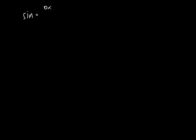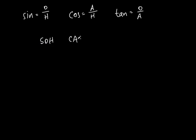Let's rewrite those three things. The sine is opposite over hypotenuse. The cosine is adjacent over hypotenuse. And the tangent is opposite over adjacent. This gives us a made-up word that sounds kind of cool: SOH-CAH-TOA. S-O-H for sine equals opposite over hypotenuse. C-A-H for cosine equals adjacent over hypotenuse. T-O-A for tangent equals opposite over adjacent. That way you can memorize what each of these things actually is. Everybody say it: SOH-CAH-TOA!